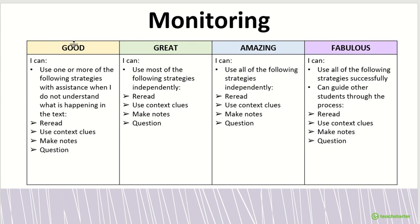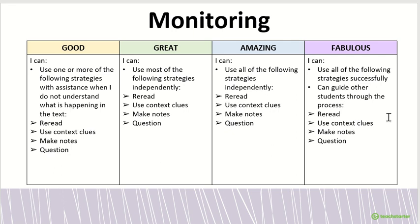Here is an example of what good, great, amazing, and fabulous monitoring would entail. It includes being able to use one or more of these strategies — you might reread, use clues to help you understand, make notes, and question. Great monitoring means you can do most of these strategies independently. Amazing is if you can do all of these strategies independently. And fabulous is if you can do it independently and also help other people through the process of rereading, looking at clues, making notes, and questioning.